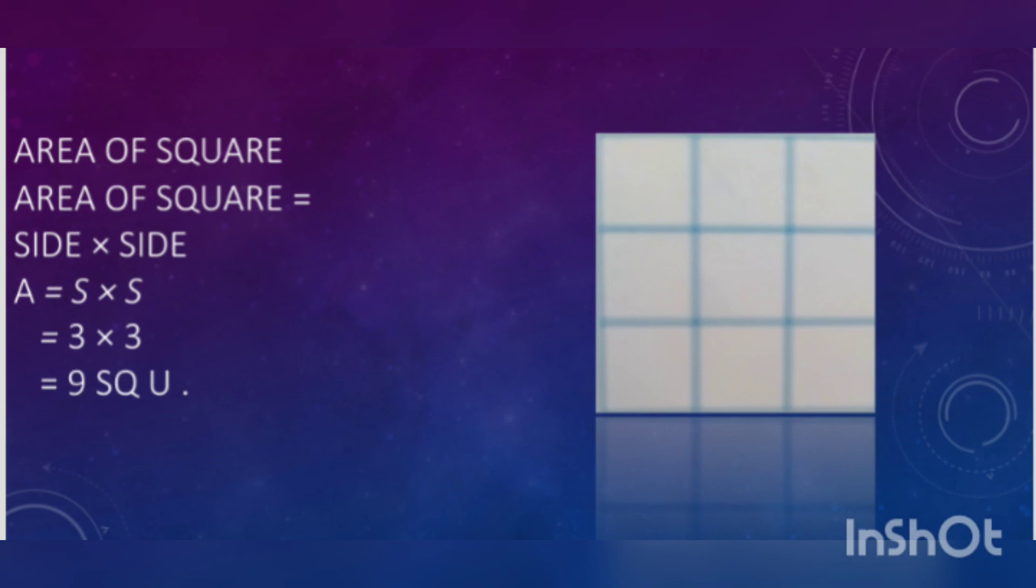Now let's calculate: three times three equals nine square units. Otherwise you can count it, but that will waste time. Using the shortcut method we can do it like this. Thanks, we will meet in another video. Till then, bye to my friends.